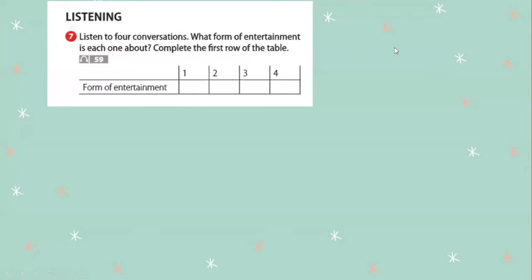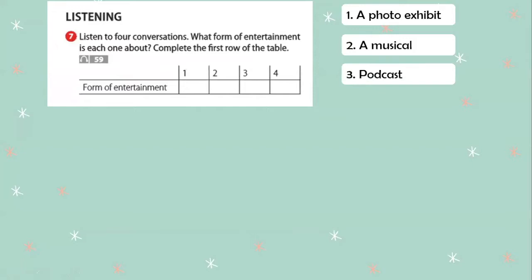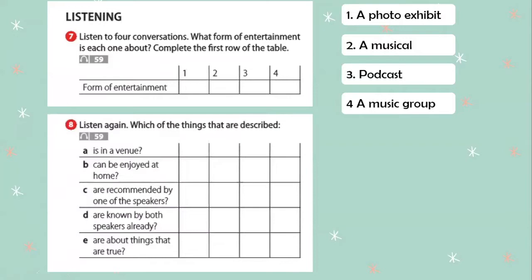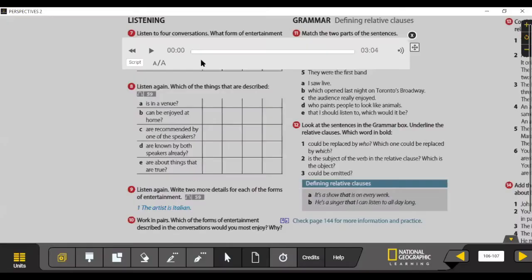Now let's check which forms of entertainment each conversation was about. Number one: a photo exhibit. Number two: a musical. Number three: a podcast. And number four: a music group. For the next exercise, we're going to listen again. You'll write which forms of entertainment fit each description. For example, which are in a venue — a place? We have number one (photo exhibit), number two (a musical), and number four (a music group). You can have more than one answer. Pause and mark with an X.